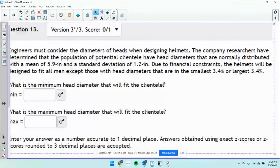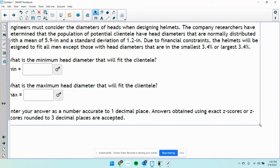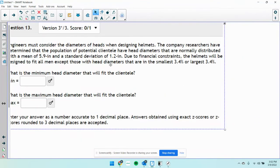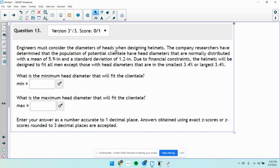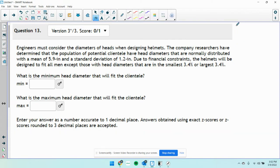This problem says engineers must consider the diameters of heads when designing helmets. Company researchers have determined that the population of potential clientele have head diameters that are normally distributed.